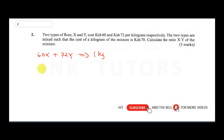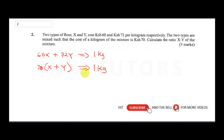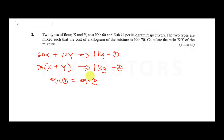It says the cost of a kilogram of the mixture is 70 Kenya shillings. So the mixture (x + y) multiplied by 70 is also equivalent to 1 kg. We now have two equivalent equations, both giving 1 kg, so we equate them: 60x + 72y = 70(x + y).